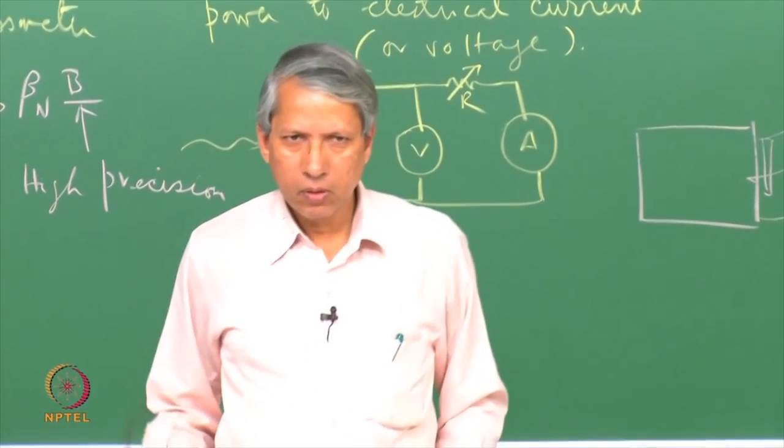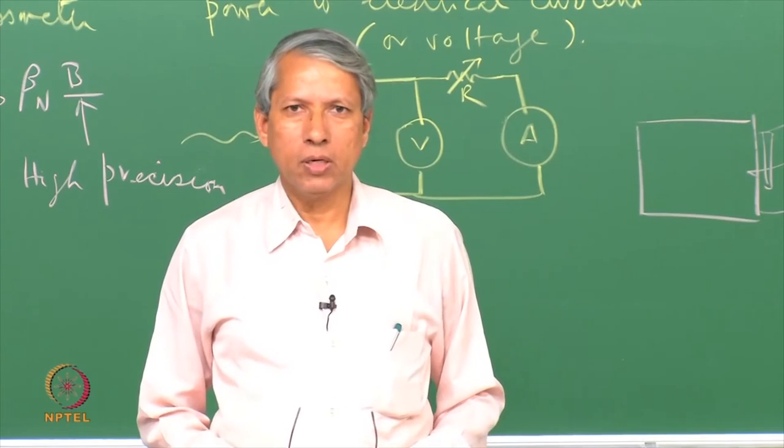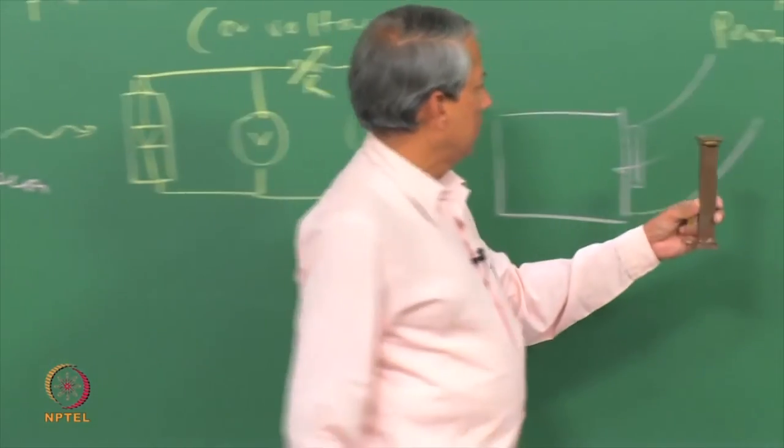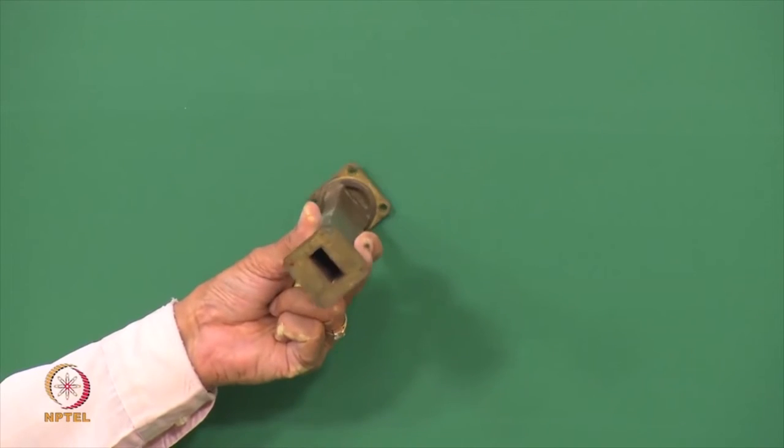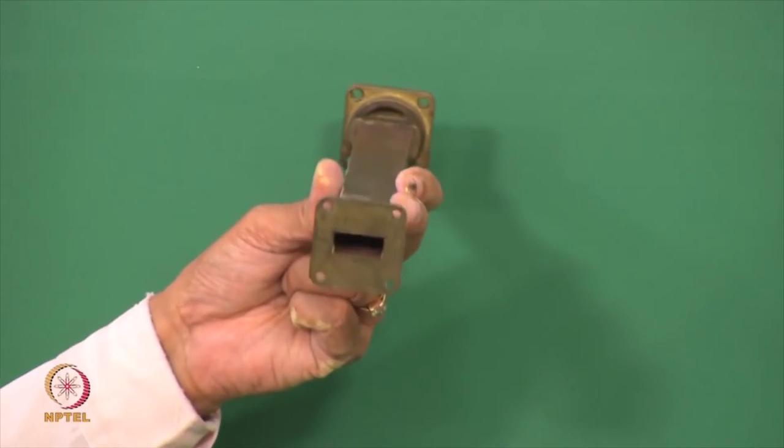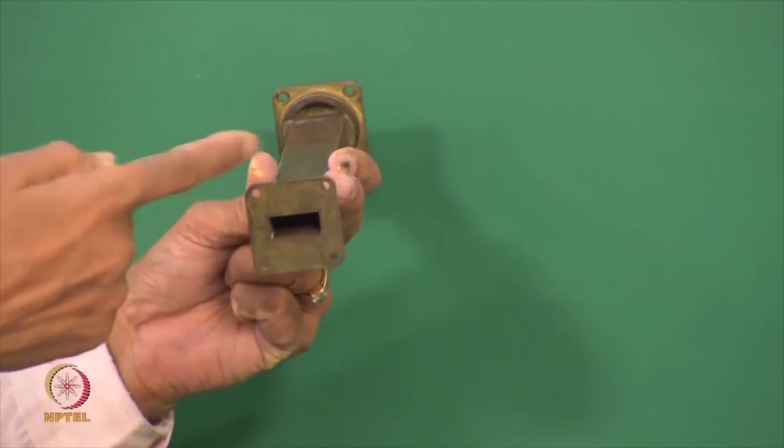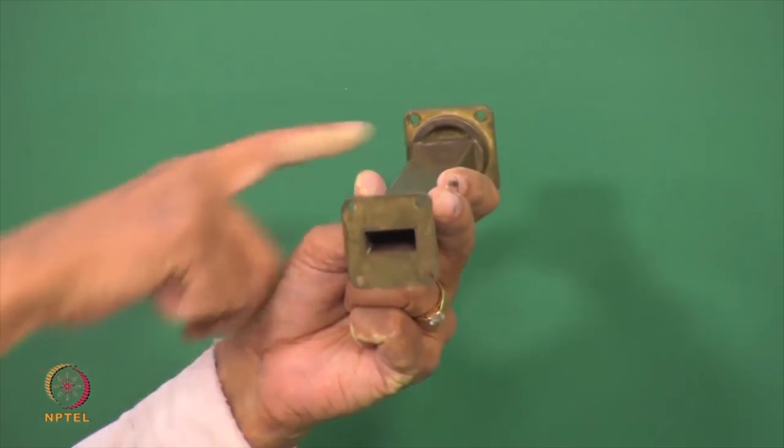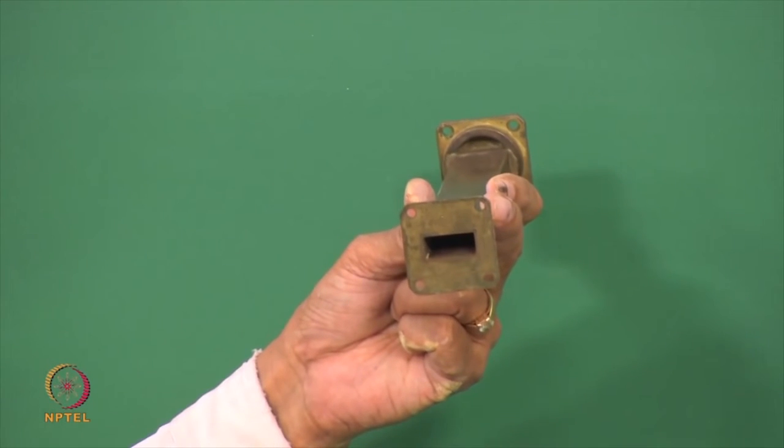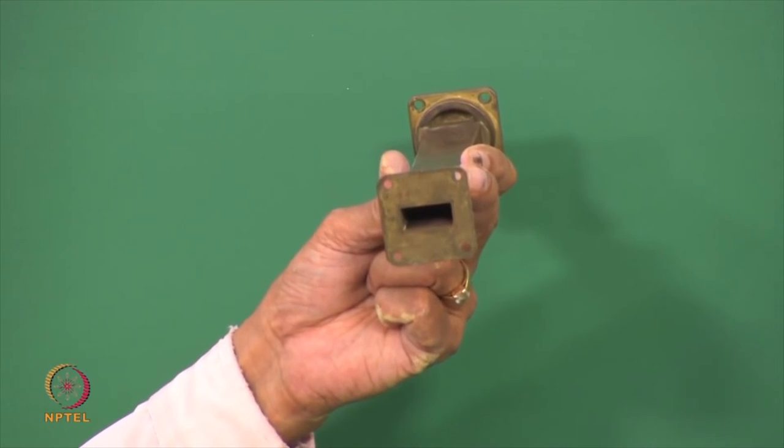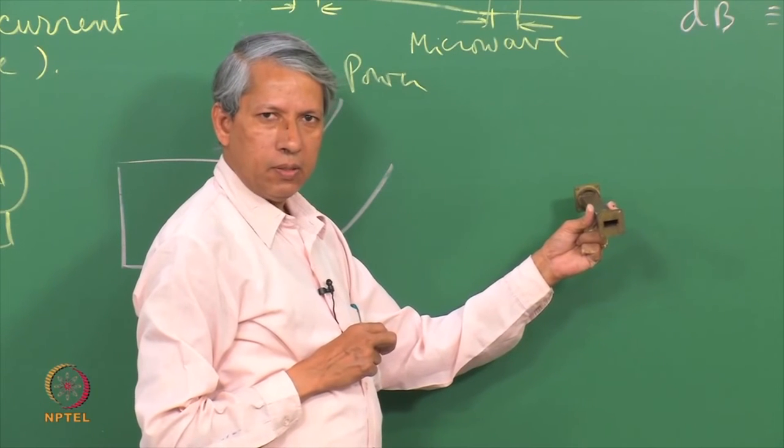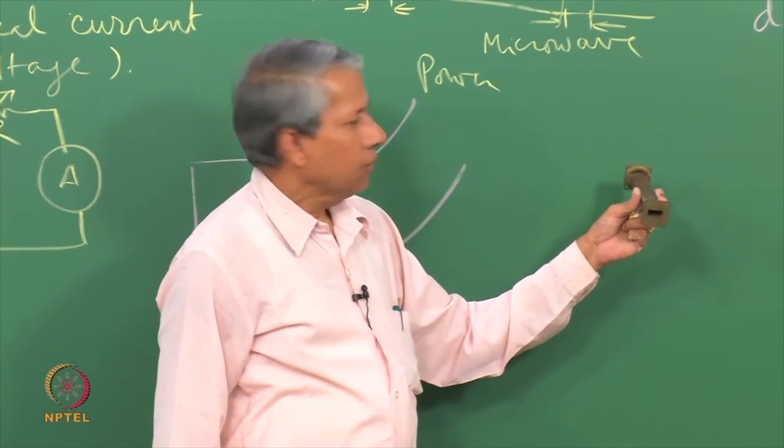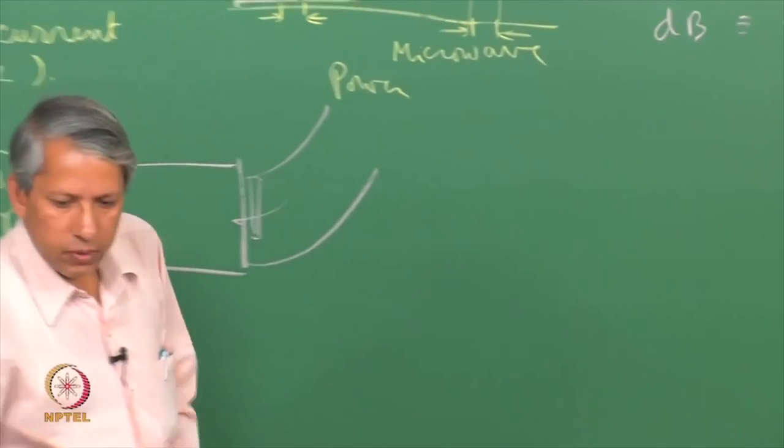Increasing crystal current, increasing bias increases the noise component. You cannot keep on increasing the bias in this fashion. You have to have certain compromise to get optimum sensitivity and optimum noise. With this we have covered all the major components of an EPR spectrometer. Before I conclude I would like to introduce a unit of measuring these various characteristics of microwave components and microwave power and this unit is called the unit of attenuation or amplification which is called dB. dB stands for decibel.